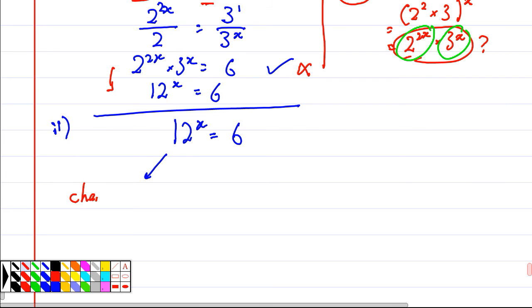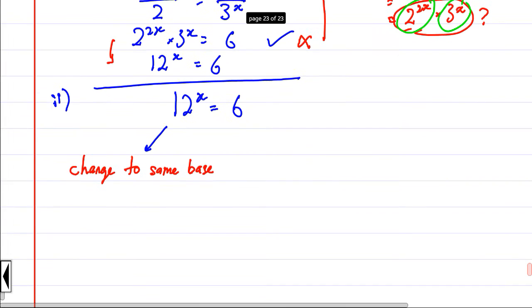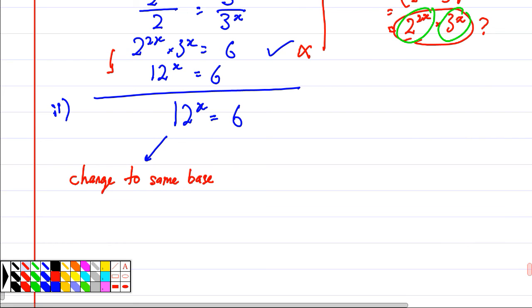So the idea here is definitely I want to change to same base. Is it possible? No. Change to the same base is the indices chapter 1 we learned. This is the correct way to do it, but is it possible? No, right? Because there's no way you can change 12 and 6 to the same base.